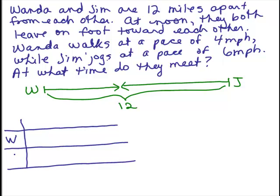So we have Wanda and Jim. And we've got a rate for each of them and a time, and then their distance.